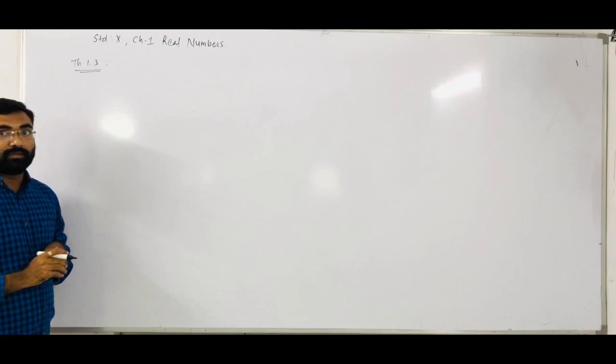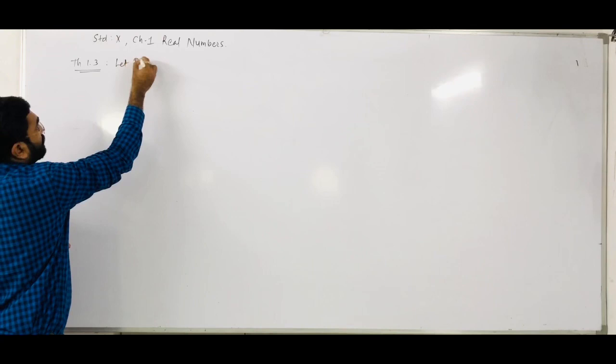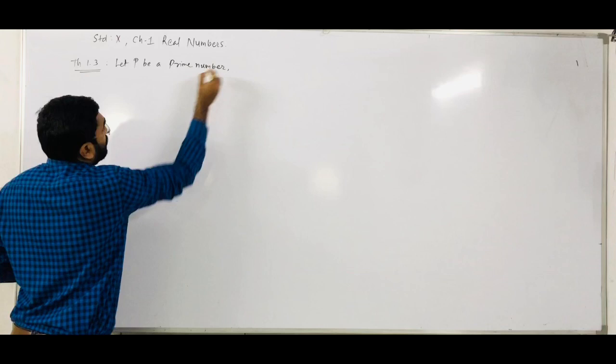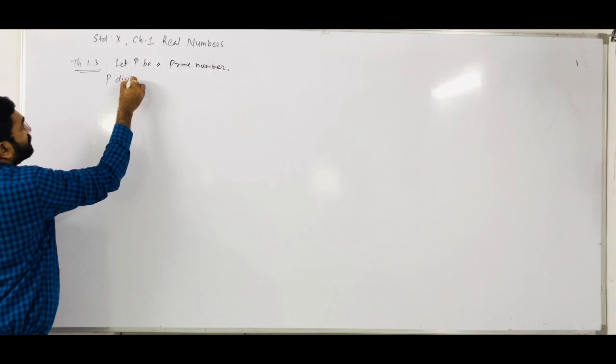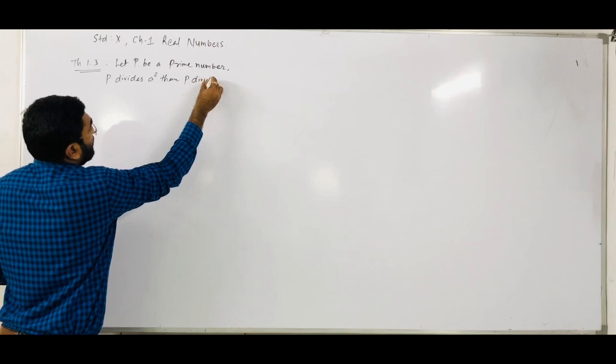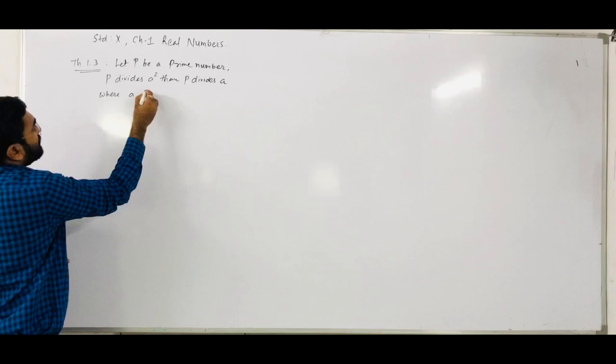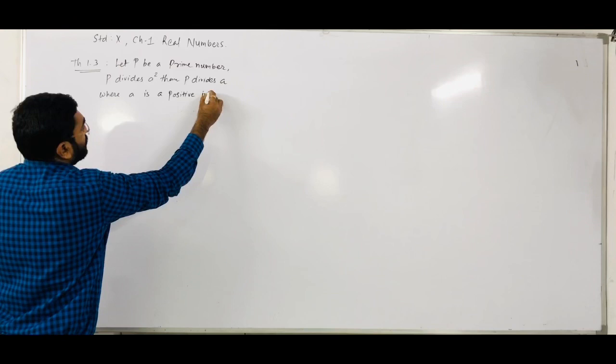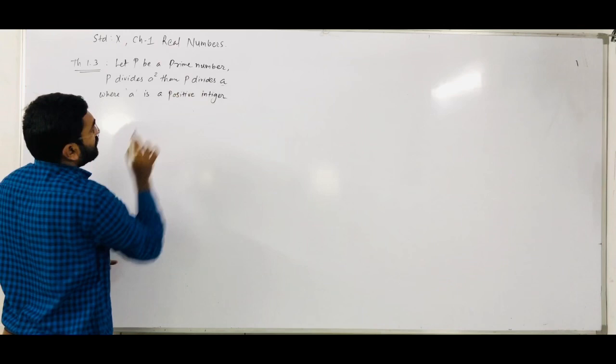Let P be a prime number. If that prime number divides A squared, then P divides A, where A is a positive integer. This A which we represent here is a positive integer.